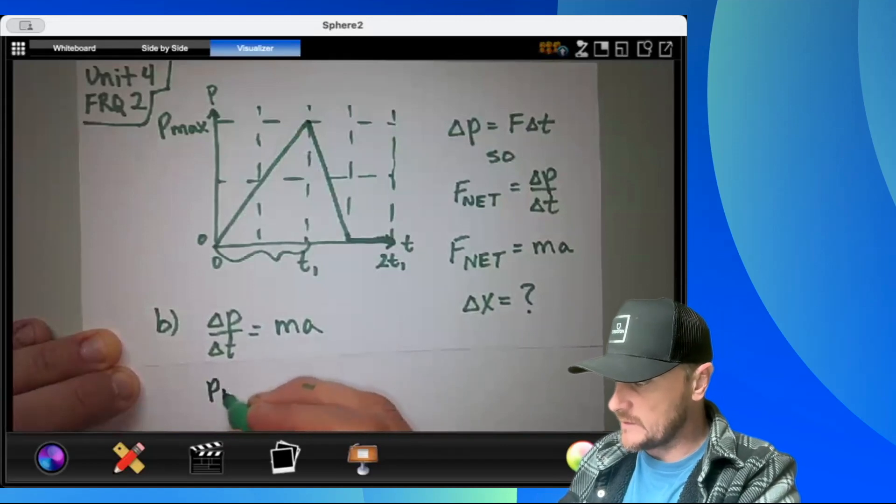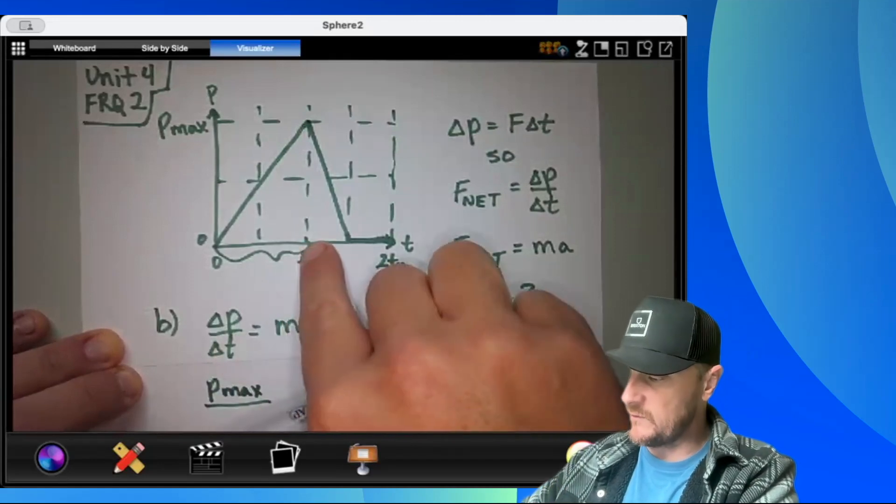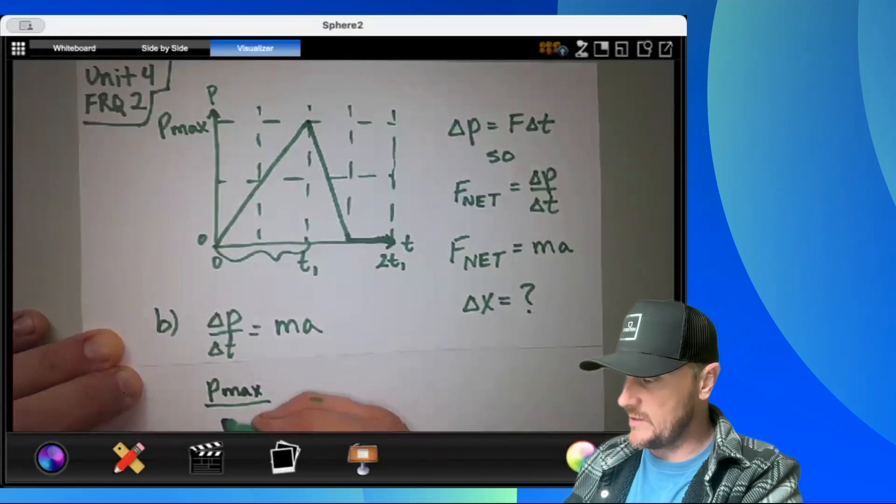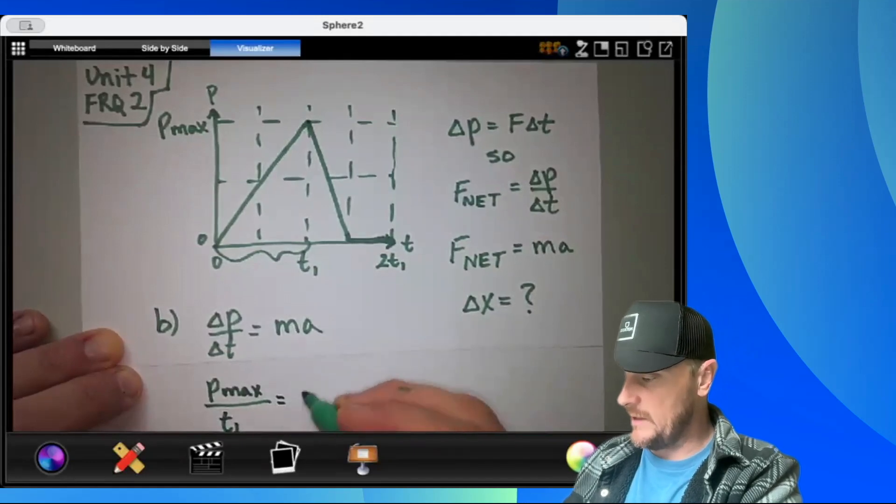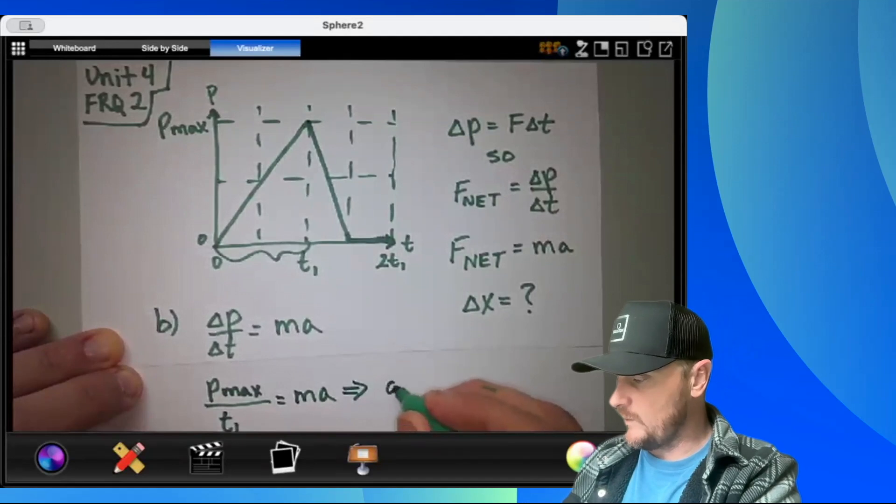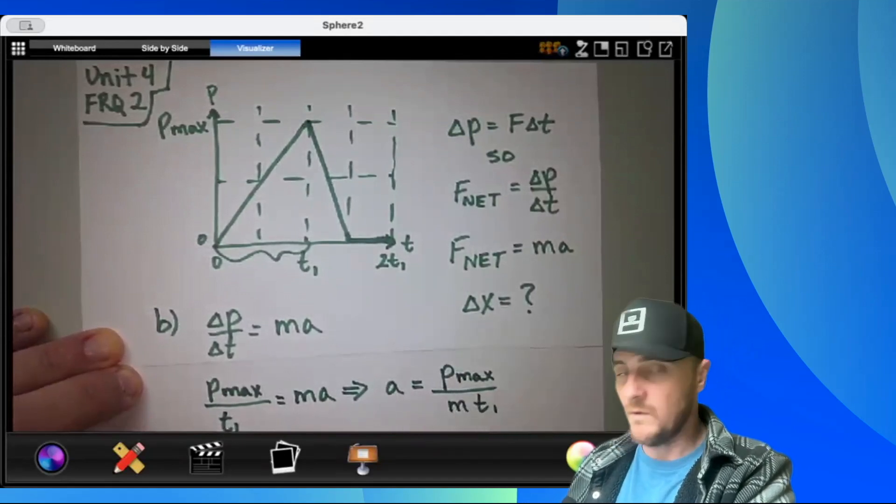So I'm going to write p max in place of delta p over delta t is t final minus t initial. So my t final would be t1 and my t initial would be zero. So delta t is just t1. And that would equal mass times acceleration. Let's solve for acceleration. We would get a equals p max divided by m t1.